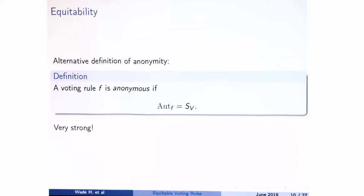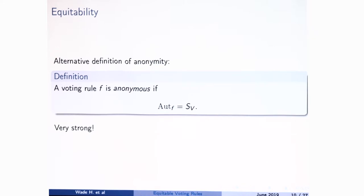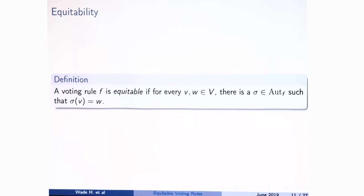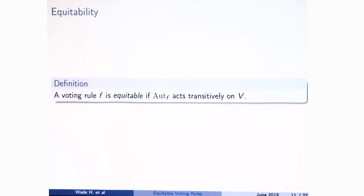This seems very strong — it seems like whatever you're trying to get at with anonymity, you went too far if you ask for every single permutation to be an automorphism of the voting rule. What we think should be the right notion is equitability: for any two voters, there should be an automorphism that sends one voter to the other. This is intended to capture the idea that nobody's playing a special role. For people who deal with group actions, this just says the action is transitive.